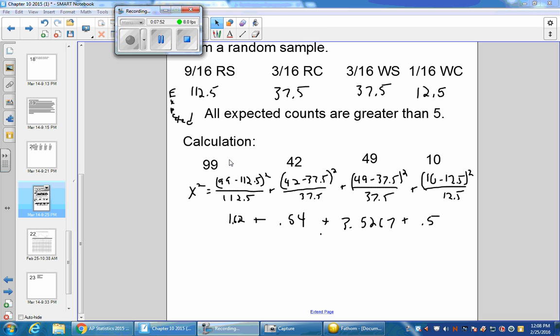I got 1.62 + 0.54 + 3.5267 + 0.5. When I sum them up, I got 6.1867. That's my chi-square statistic, and that's going to approximate my chi-squared.